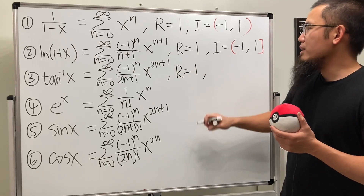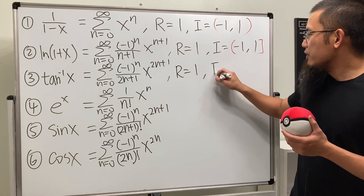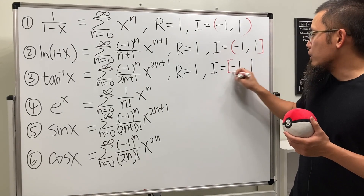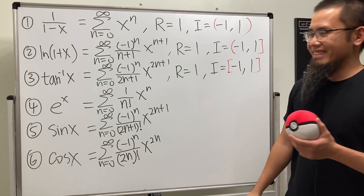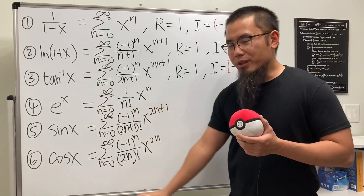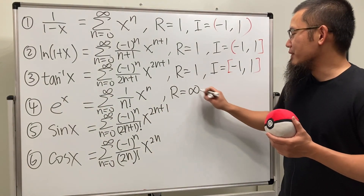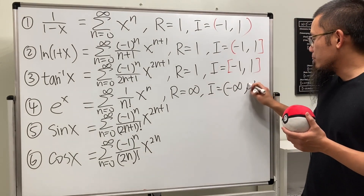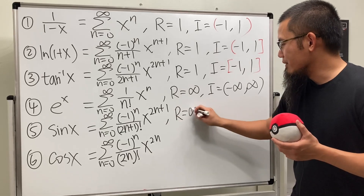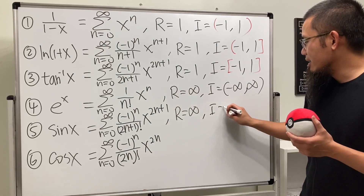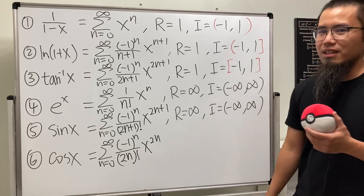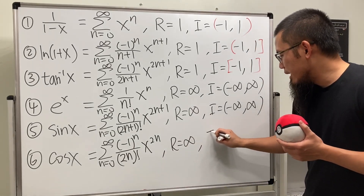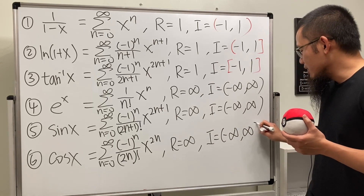For inverse tangent, R is also equal to 1. So we have three functions with R=1. The interval of convergence goes from negative 1 to 1 and we include both endpoints. For cosine, sine, and e to the x, R is infinity and the interval of convergence is from negative infinity to positive infinity.